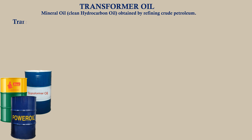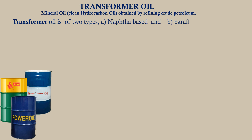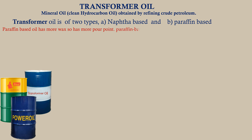Transformer oil is of two types: naphtha-based and paraffin-based. Paraffin-based oil has more wax, so it has a higher pour point. Paraffin-based oil is commonly used due to its high availability.